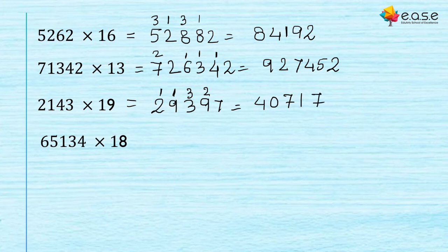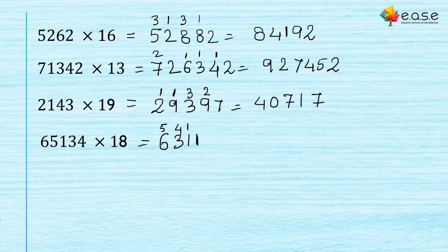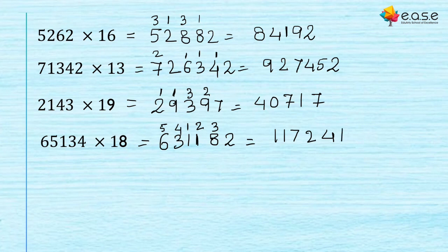Next question: write 6 as it is. Then 8 × 6 = 48, 48 + 5 = 53. Then 8 × 5 = 40, 40 + 1 = 41. Then 8 × 1 = 8, 8 + 3 = 11. Then 8 × 3 = 24, 24 + 4 = 28. Then 8 × 4 = 32. The final answer is 117241(2). I hope you all understood this.